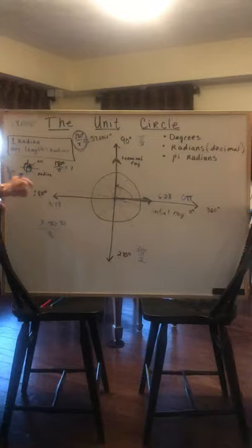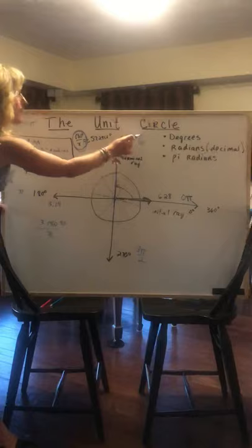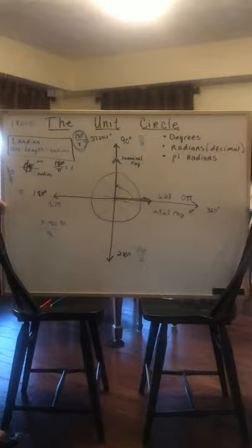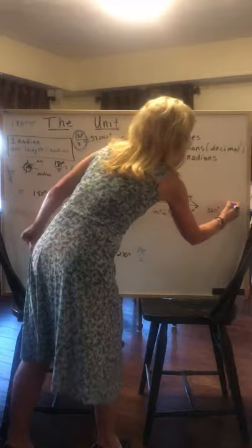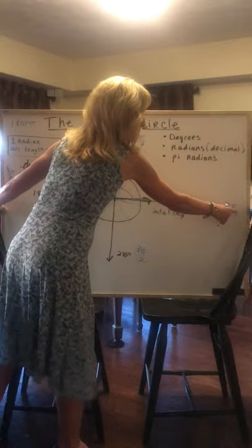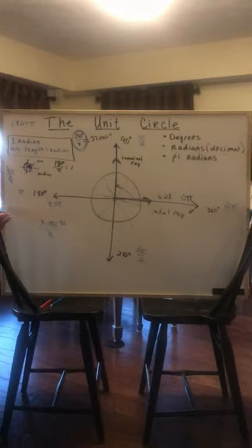Is that true? Well guess what, 3 times 180 divided by 2 is 270 degrees. 3 times 180 divided by 2, 2 goes into 180 90 times, 3 times 90 is 270, that's true. So I'm going to start again, 0 pi over 2, 1 pi over 2, 2 pi over 2, 3 pi over 2, 4 pi over 2. 4 pi over 2 reduced is 2 pi.